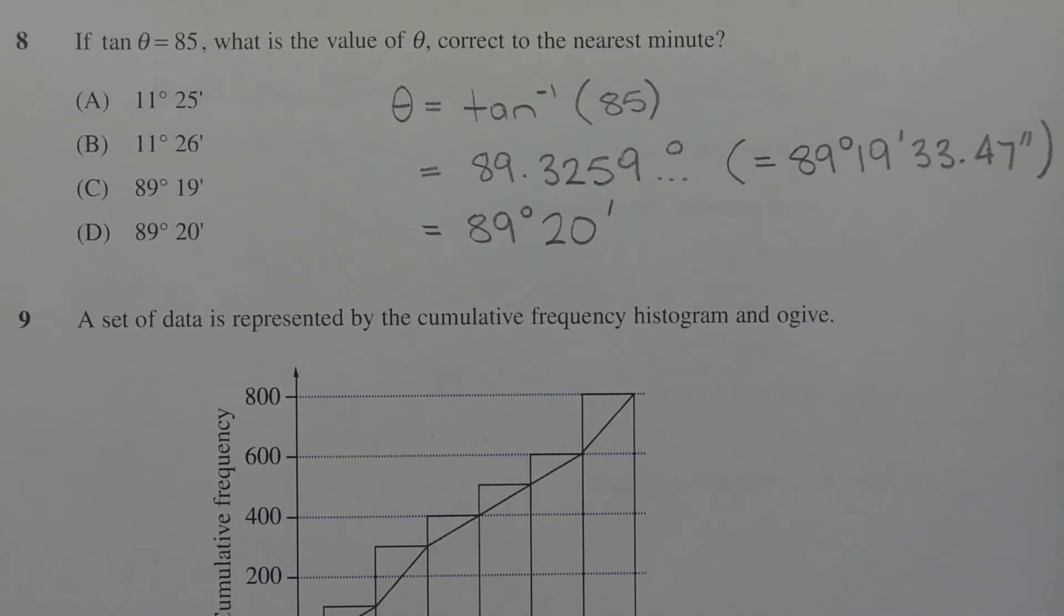Now, the question is asking for the value of theta correct to the nearest minute. Since the number of seconds here is greater than or equal to 30, this 19 minutes needs to get rounded up to 20. So that rounds to 89 degrees, 20 minutes.